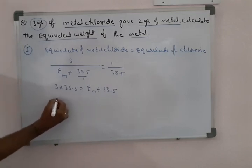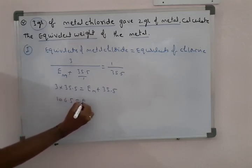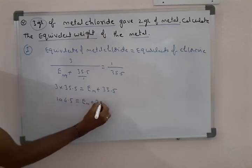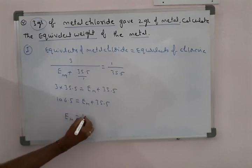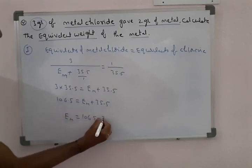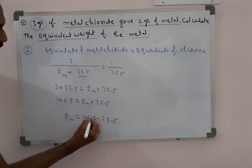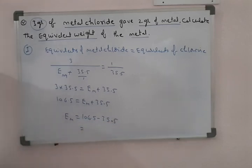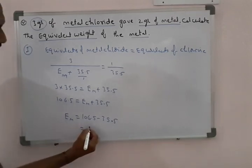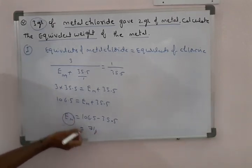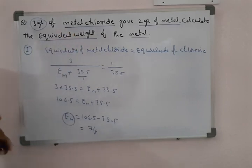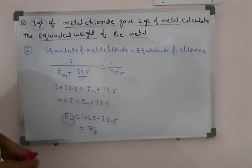By cross multiplication, that is 3 equals 3 into 35. The equivalent weight of metal equals exactly 71. This is the equivalent weight of that unknown metal. Now we do the same problem using the second method.